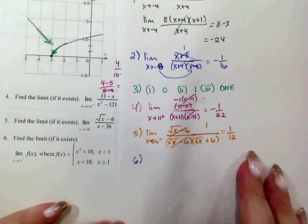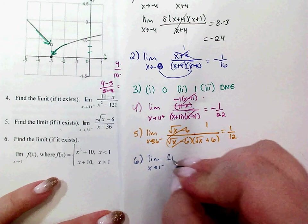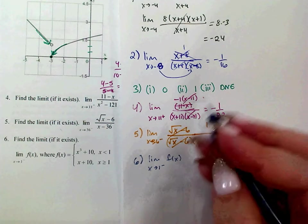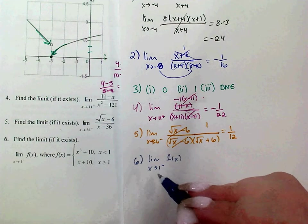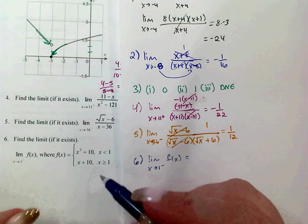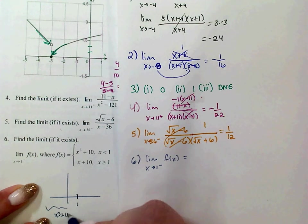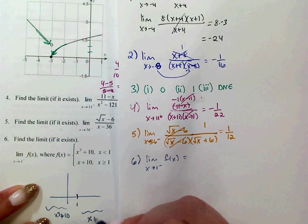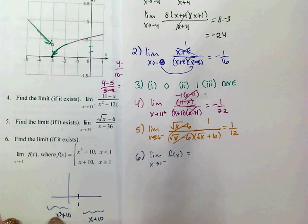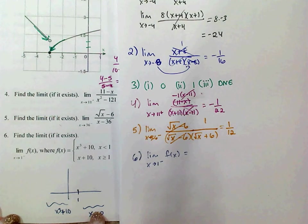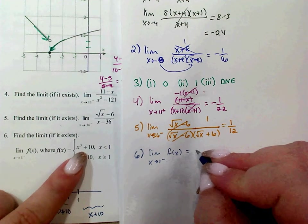Number 6: find the limit as x approaches 1 from the left of this piecewise function. Approaching from the left means you plug into the left-side piece, which is x cubed plus 10. Approaching from the right would use x plus 10. Since we're approaching from the left, we plug 1 into x cubed plus 10: 1 cubed plus 10 equals 11.